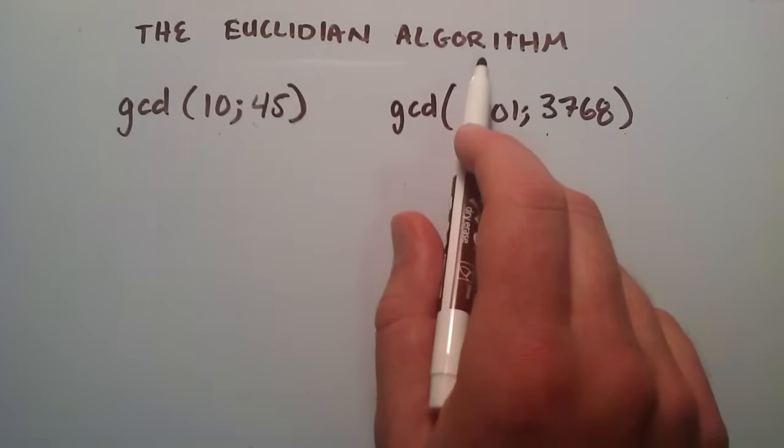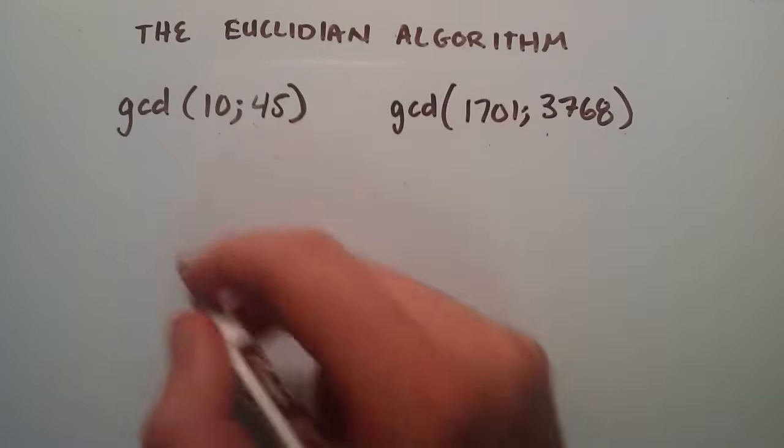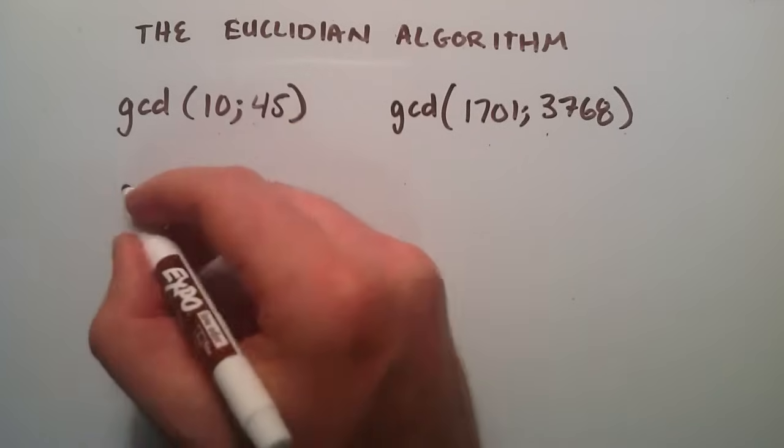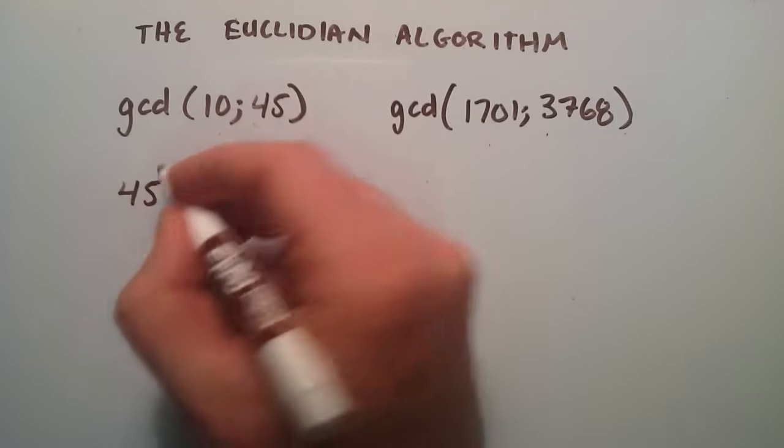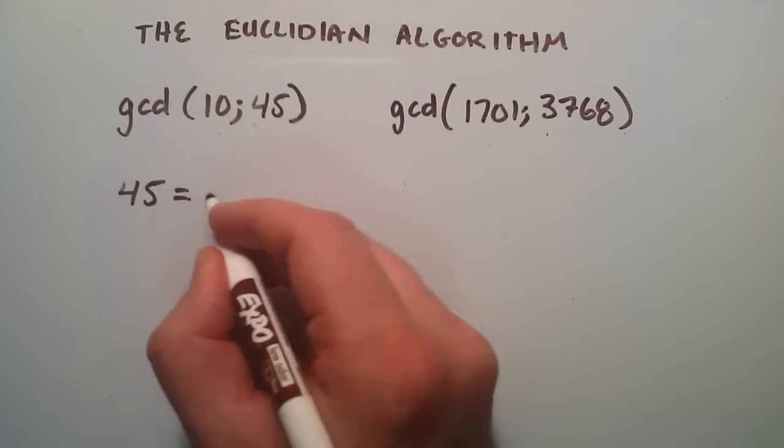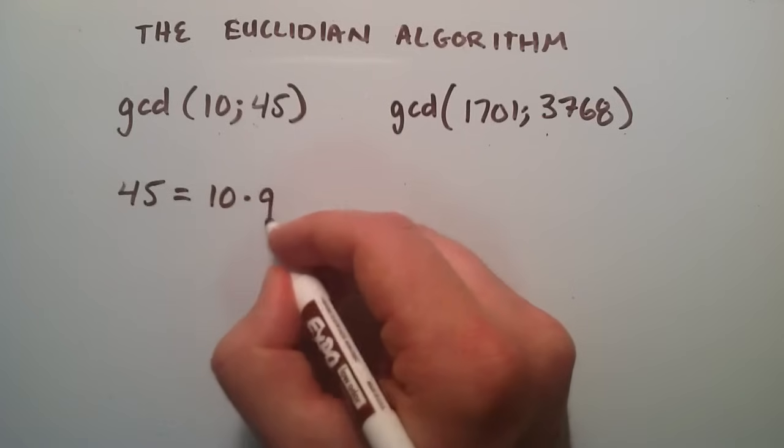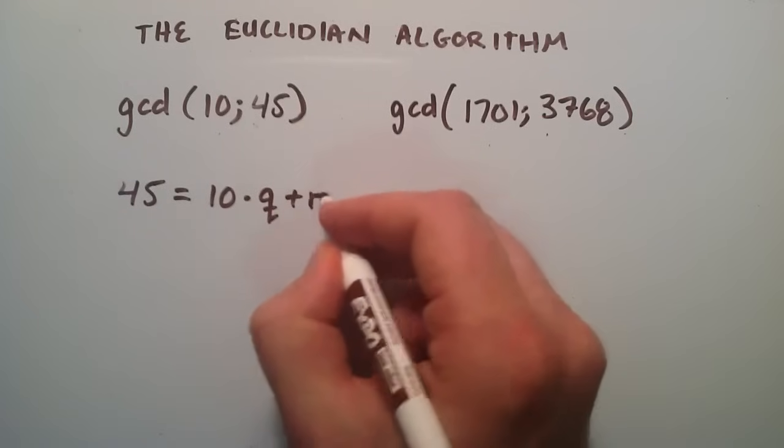So what we do is we take the larger of the two numbers, so in this case it's going to be 45, and then we set it equal to the smaller number times some number q plus some number r.